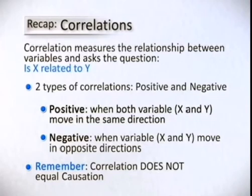Correlation measures the relationship between variables and asks the question, is X related to Y? The two types of correlations are positive and negative. Positive correlations involve both variables, X and Y, moving in the same direction. Negative correlations involve both variables, X and Y, moving in opposite directions. Remember, correlation does not equal causation.